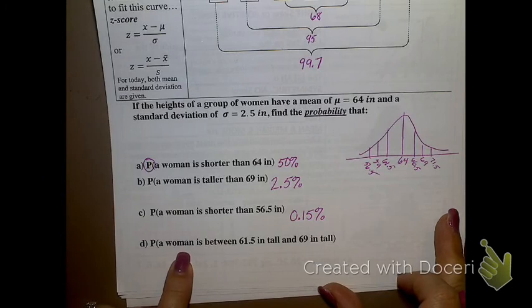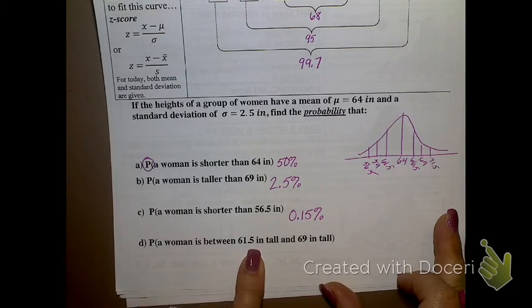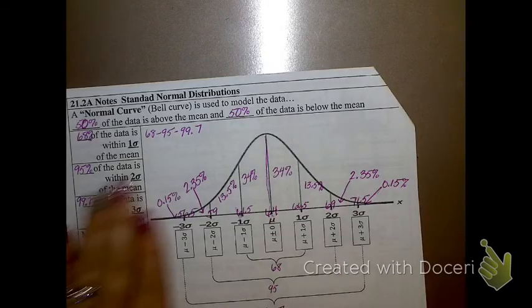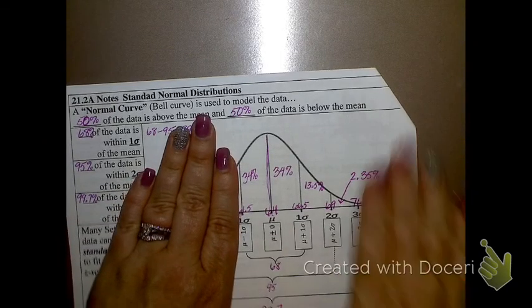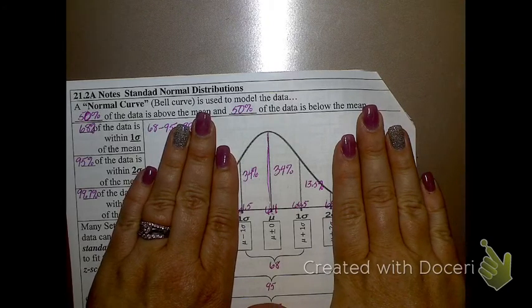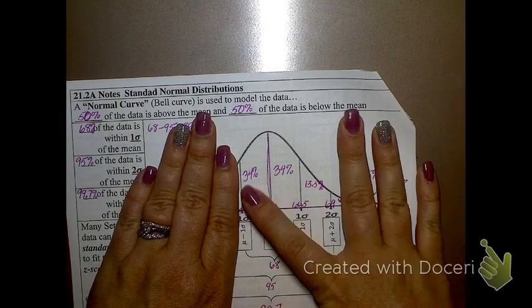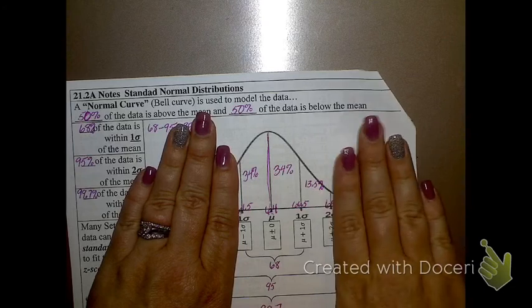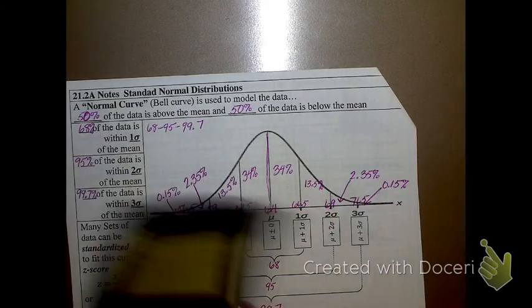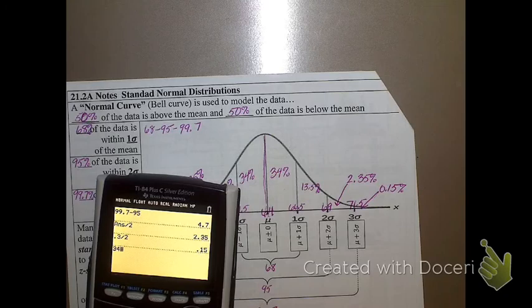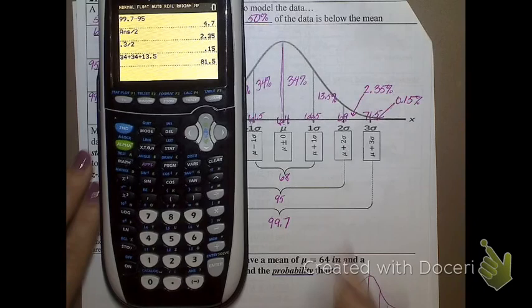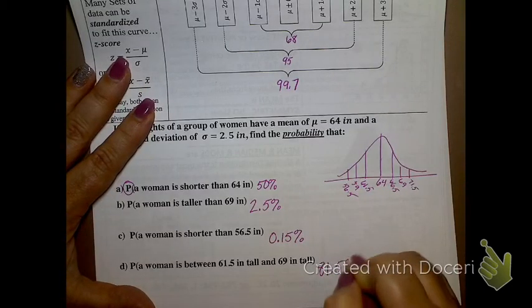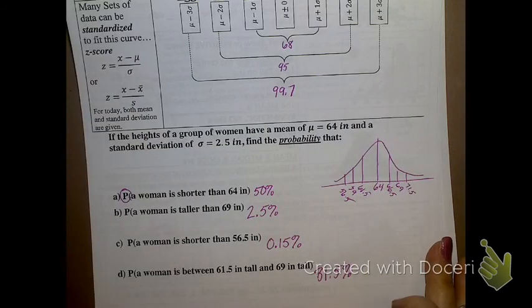And then finally, the probability that a woman is between 61.5 and 69. Well, here's 61.5. Here's 69. So, what do I need to add together? 34, 34, and 13.5, correct? What does that give me? 34 plus 34 plus 13.5. 81.5%. Does that make sense?